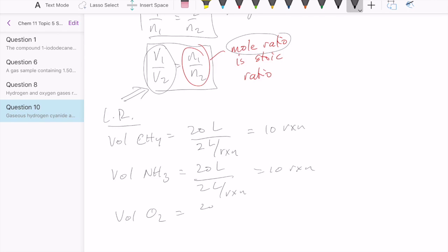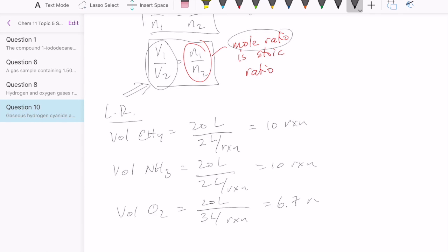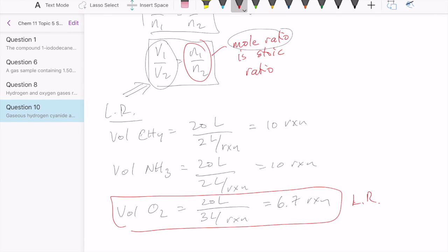Oxygen, 20 liters, but coefficient of 3. So we get 6.7 reactions. Since that's the one that gives us the least number of reactions, that's our limiting reactant.